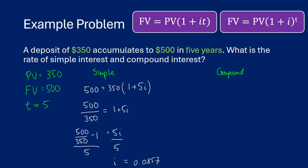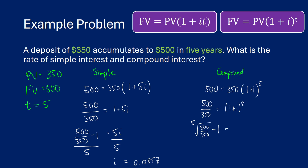For compound interest, we use: 500 equals 350 times one plus i raised to the 5. So 500 divided by 350 equals one plus i to the 5. To solve for i, we take the fifth root of 500 over 350, then subtract 1. That gives us 500 divided by 350 raised to the power of one-fifth, minus 1, which equals 0.0739 — an effective interest rate of about 7.4%. So we need about 1.2% less interest with compound interest compared to simple interest to achieve the same growth over five years.